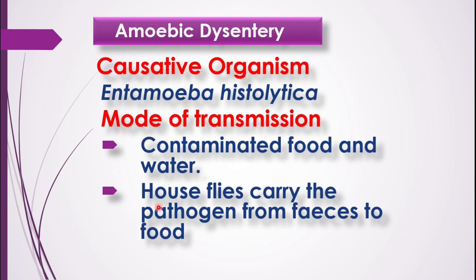The second method of transmission is that house flies behave as carriers. They carry the pathogen from the feces of an infected person to the food. If defecation happens in an open place and the feces contain Entamoeba histolytica, the pathogen may be transferred from the feces to open food material by house flies.